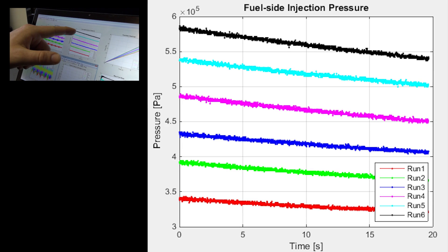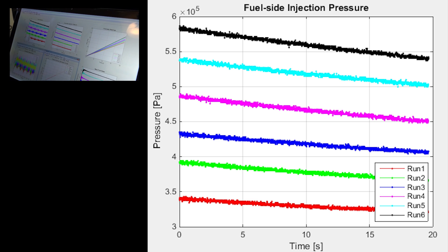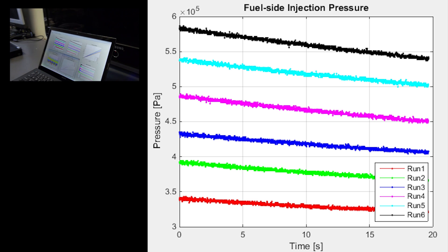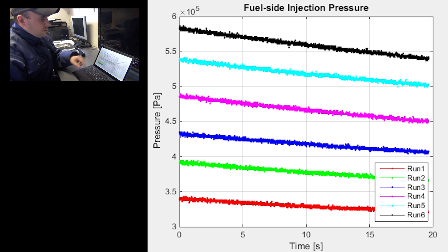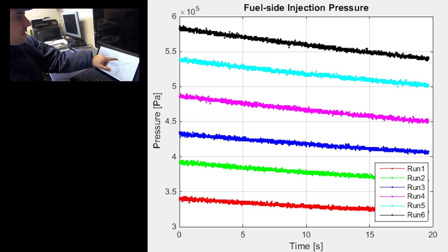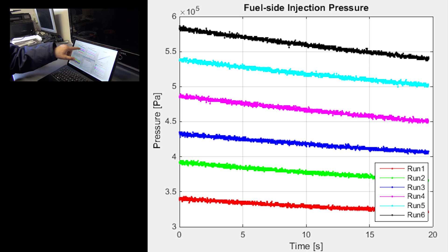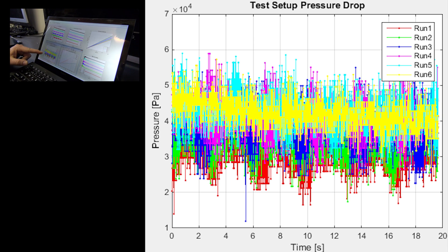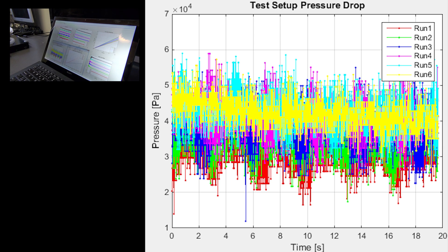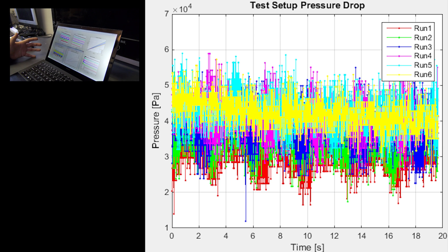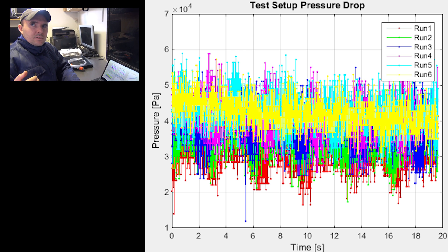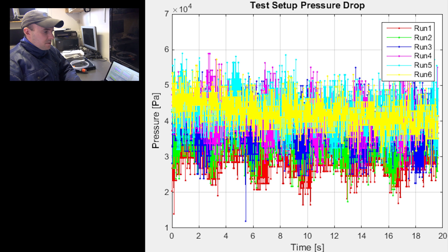The next pane shows you the injection pressure on the fuel side of the injector — this is measured just downstream, right before the water, the fuel emulator in this case, enters the injector. Here you see pressure measurements which closely mimic those of the tank pressure but with an offset. That offset is also depicted, showing that we are dropping about 0.4 bars of pressure through the pneumatically operated valve and piping between the tank and the injector itself.